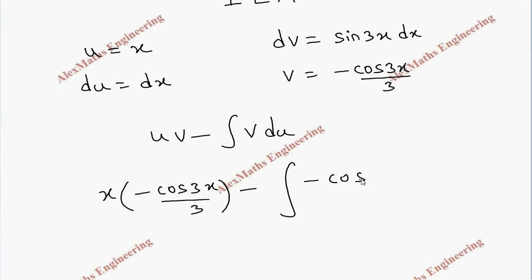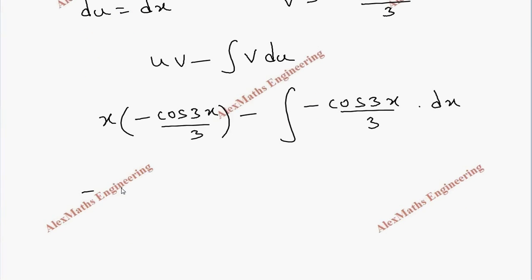Now let's rearrange this. This is minus x cos 3x by 3, and this term we can make as plus and we can take 1 by 3 out and remaining is cos 3x dx.